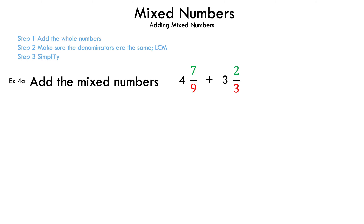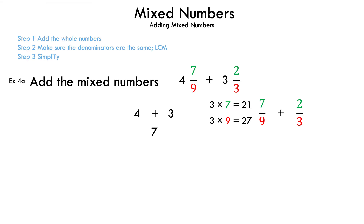Now let's take a look at example 4a: add the mixed numbers 4 and 7/9 plus 3 and 2/3. This time our denominators are different. Same process — add the whole numbers 4 and 3, and the result is 7. After we write down the fractions, this time we're going to multiply the two denominators to find a common denominator. Sometimes that's the fastest way, sometimes it's not — you just have to try a few times to figure out which method you like. So since we're multiplying 9 and 3, we multiply the numerator and denominator by 3: 3 times 7 is 21, and 3 times 9 is 27 — that is our new fraction, 21/27.